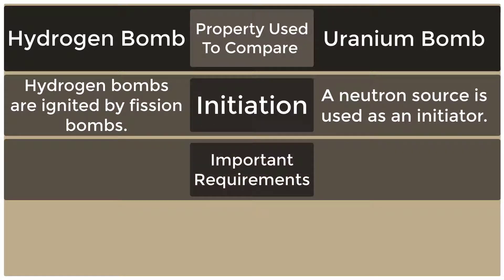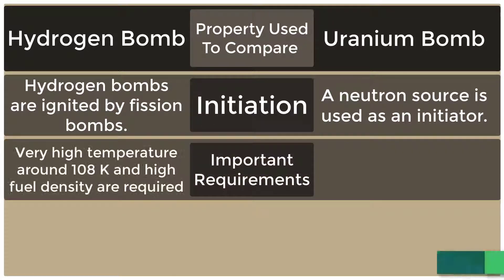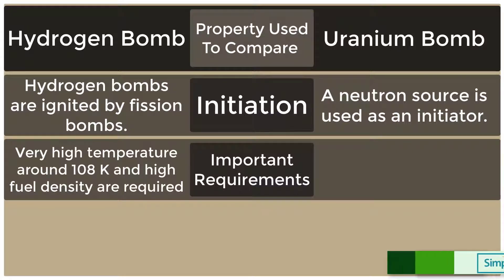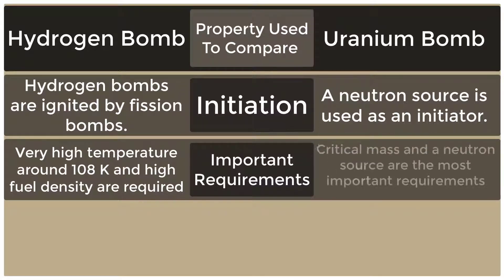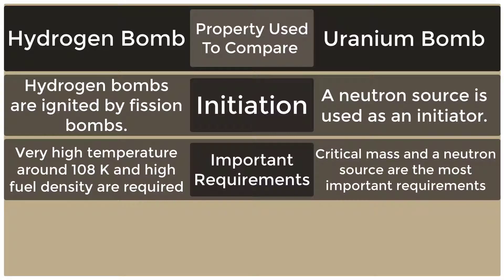Important Requirements: For the Hydrogen Bomb, very high temperature around 10^8 K and high fuel density are required. Whereas for the Uranium Bomb, Critical Mass and Neutron Source are the most important requirements.